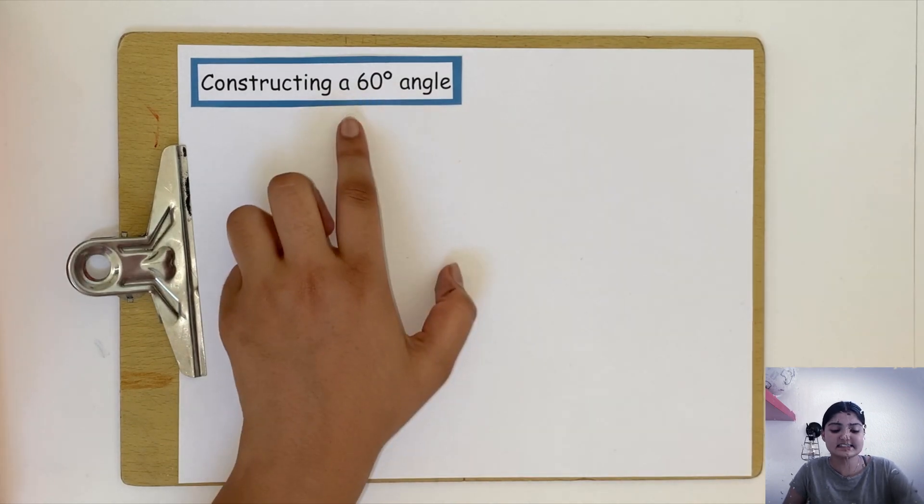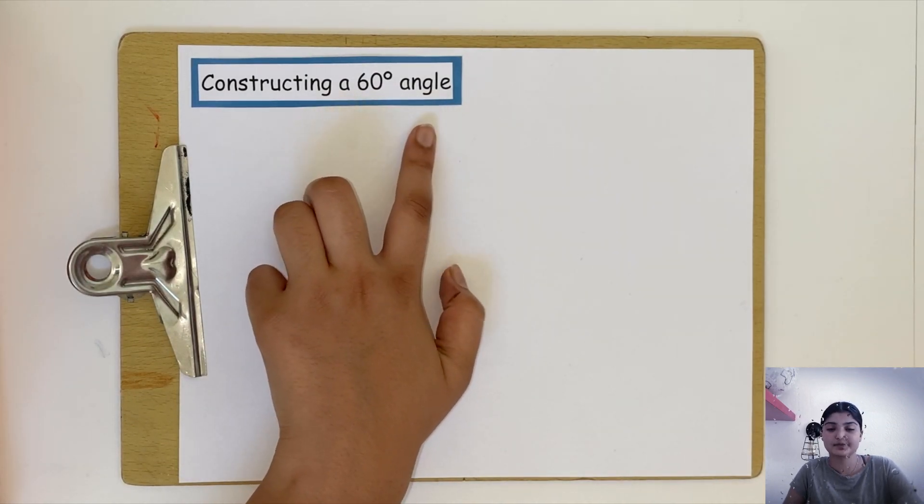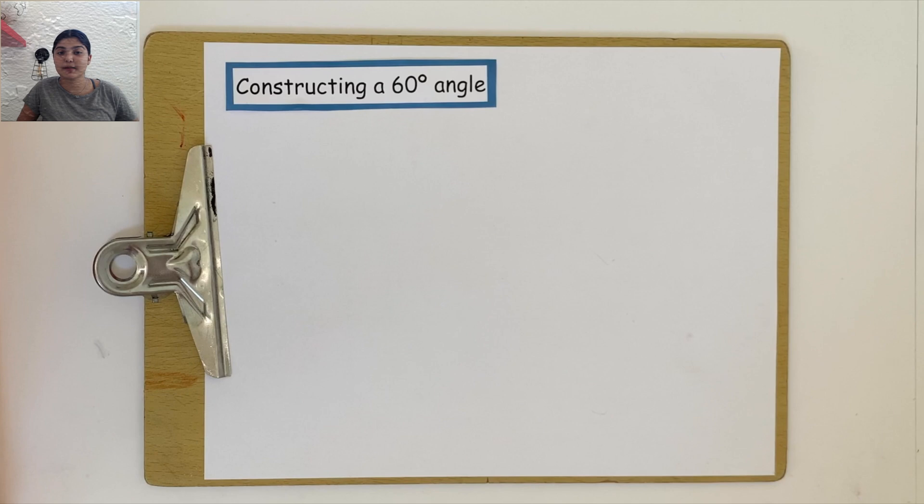Today let's draw some angles using a compass. Let's construct a 60-degree angle, so we can start by drawing a horizontal line.